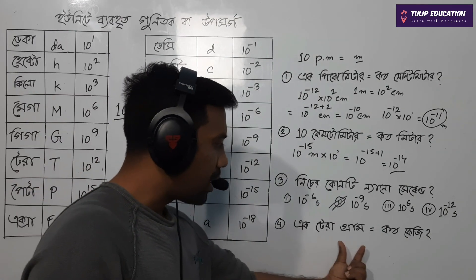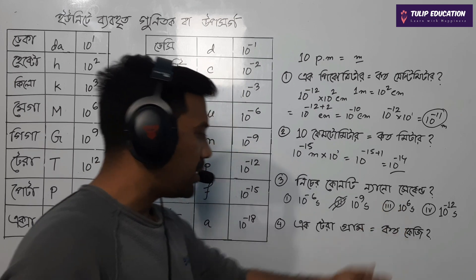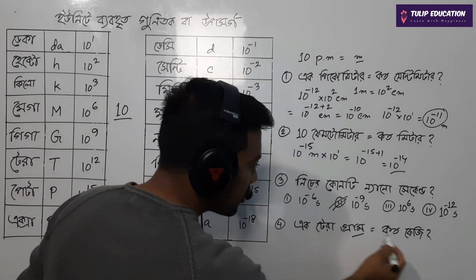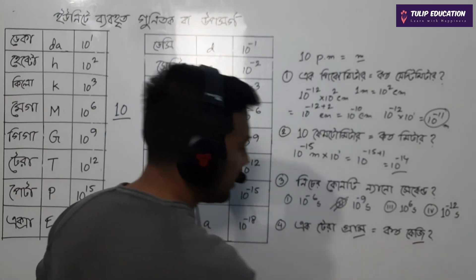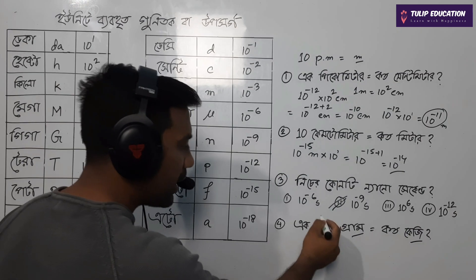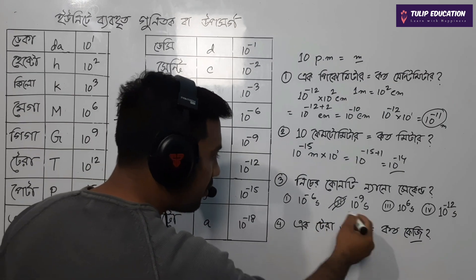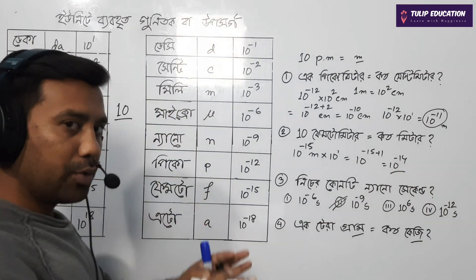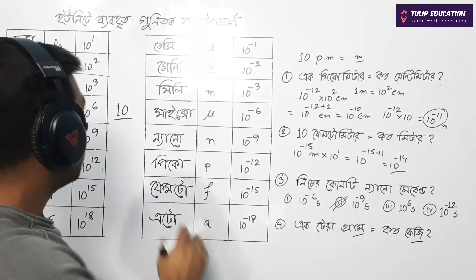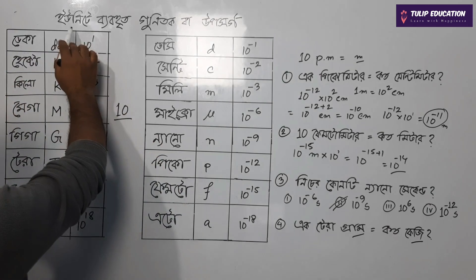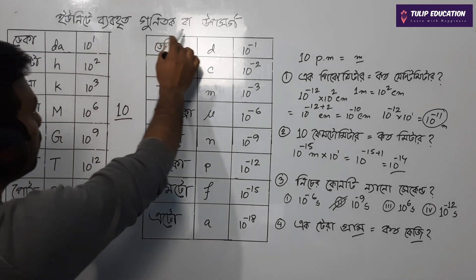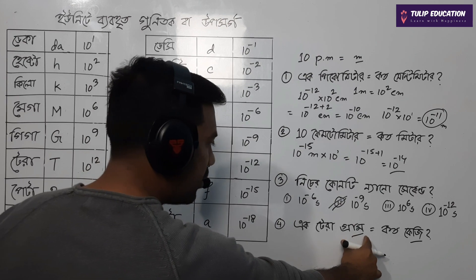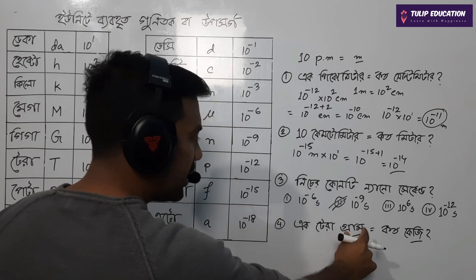1 teragram is 0.5 kg. 1 gram is 0.5 kg. So 1 teragram is 0.5 kg. I am saying that this is a unit of probability. That's the use of 1 tera — if we use that, the unit of 1 against 1, 1 term, 1 tera.